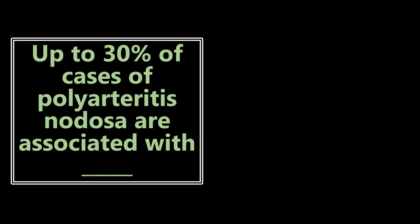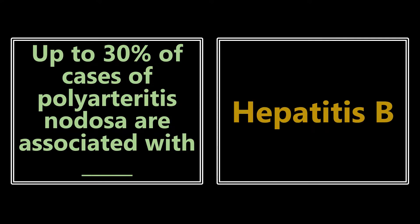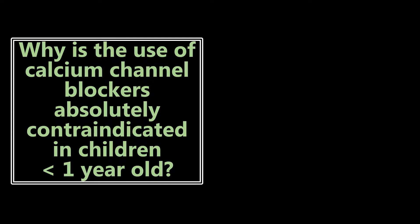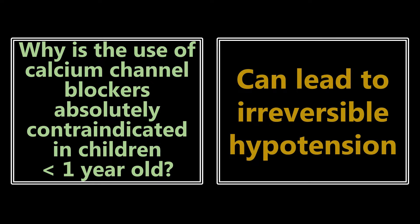Up to 30% of cases of polyarteritis nodosa are associated with hepatitis B. So if you see polyarteritis nodosa on the exam, also think hepatitis B. Why are calcium channel blockers absolutely contraindicated in children less than one year old? Because they can lead to irreversible hypotension — that is an absolute contraindication.